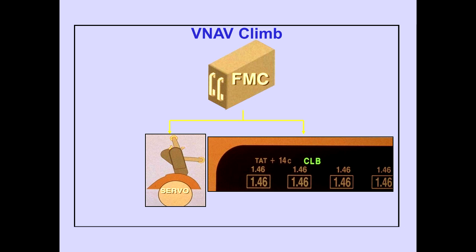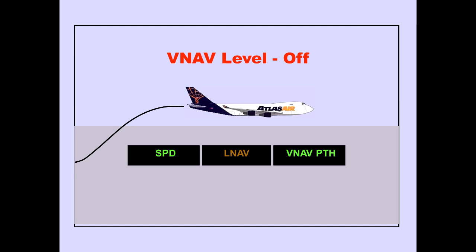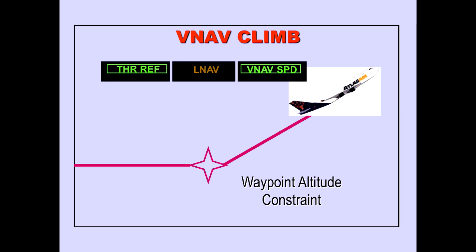The FMC commands the autothrottle to maintain the thrust reference limit displayed on EICAS. During a VNAV climb, an automatic level-off occurs when reaching a waypoint altitude constraint or cruise altitude. During a VNAV level-off, the autothrottle maintains speed, and the autopilot pitch maintains the VNAV path. When the airplane passes the constraining waypoint, the VNAV climb continues.